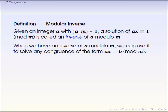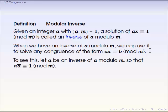When we have an inverse of a modulo m, we can use it to solve any congruence of the form ax congruent to b modulo m, by simply multiplying that inverse on both sides.